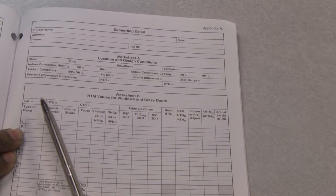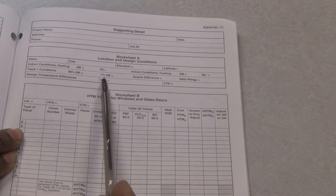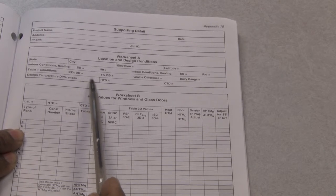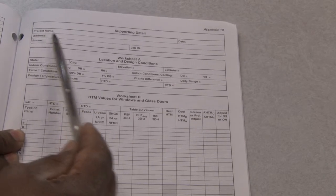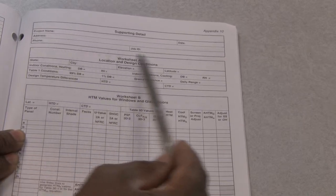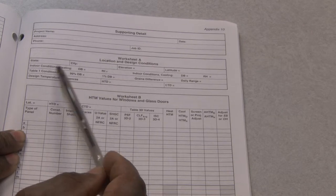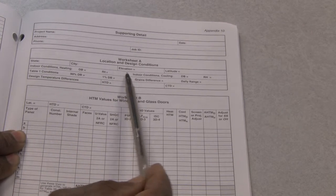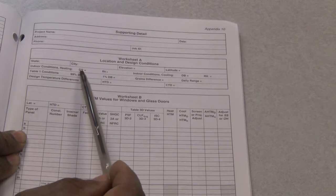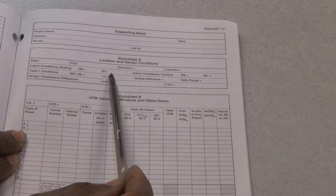Basically worksheet A is just your general information that you need. If you go to a job site, you will use this information while you're walking through the house, taking down information. The customer's name, the date you was there, the address of the job, the phone number. If you had a job ID number, then you would go into the state, the city, the elevation, the latitudes, the indoor conditions. They say the dry-bulb temperature was basically the room temperature and the relative humidity.